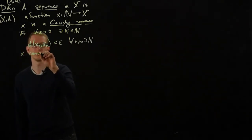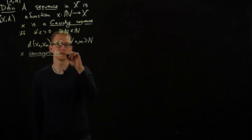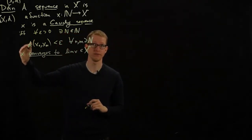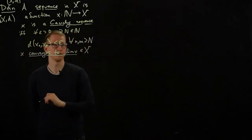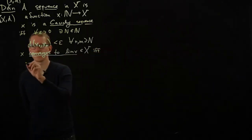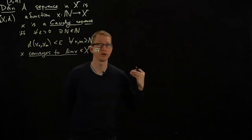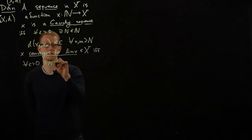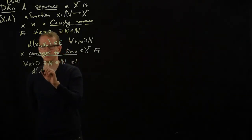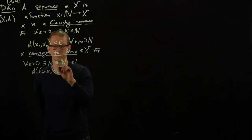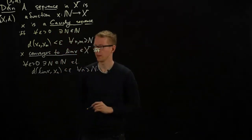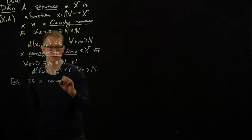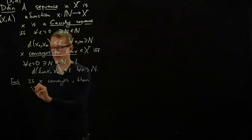X converges to an element lim X, which is an element of X. By the way, notice that here is where I started to use the metric for the definition of a Cauchy sequence. X converges to lim X if and only if—this time we replace this condition—for all ε>0, there exists a natural number N such that the distance between this candidate for a limit and xₙ is less than epsilon for all n≥N. It's a fact that if X converges, then X is Cauchy.